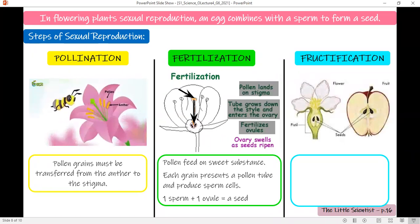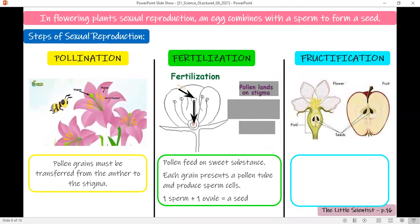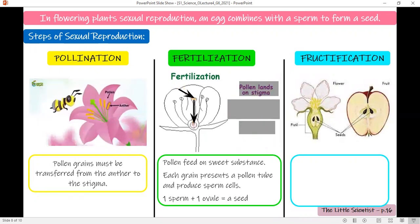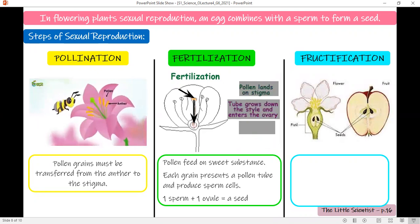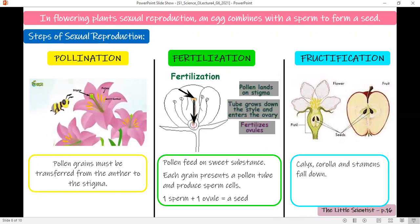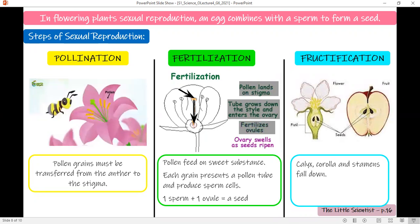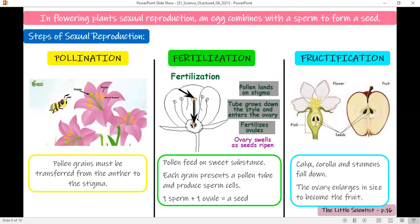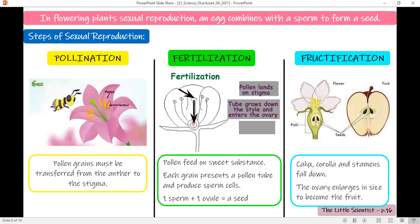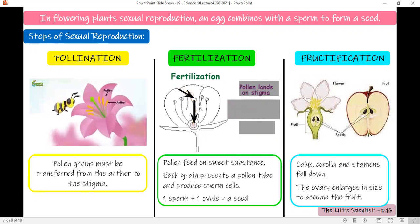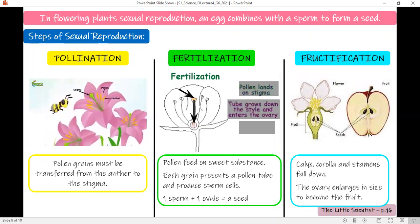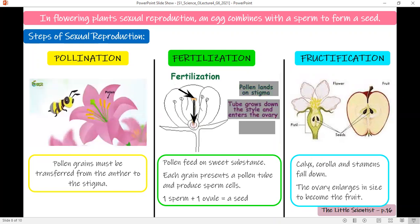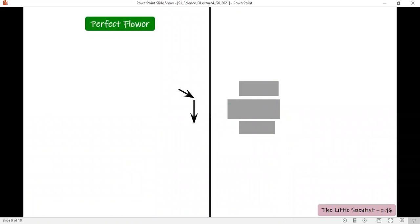The last part now, which is fructification. Easy to define—this is for plants that grow fruits. After fertilization, all the parts of the flower will fall down: the calyx, the corolla, the stamens—everything falls down except for the ovary. The ovary will turn into a fruit. Here I'm talking about plants that grow fruits only. Pollination, fertilization, fructification are the three steps of sexual reproduction in plants.